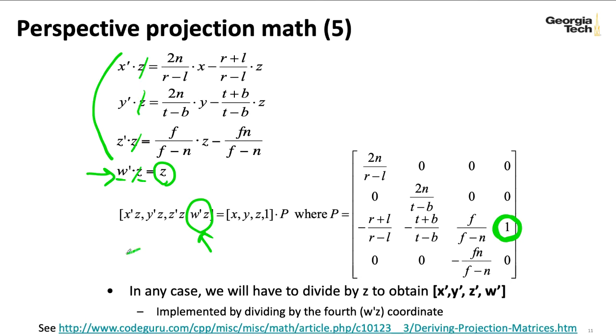and my Z prime. And then I'll be left with a 1 in that W coordinate.